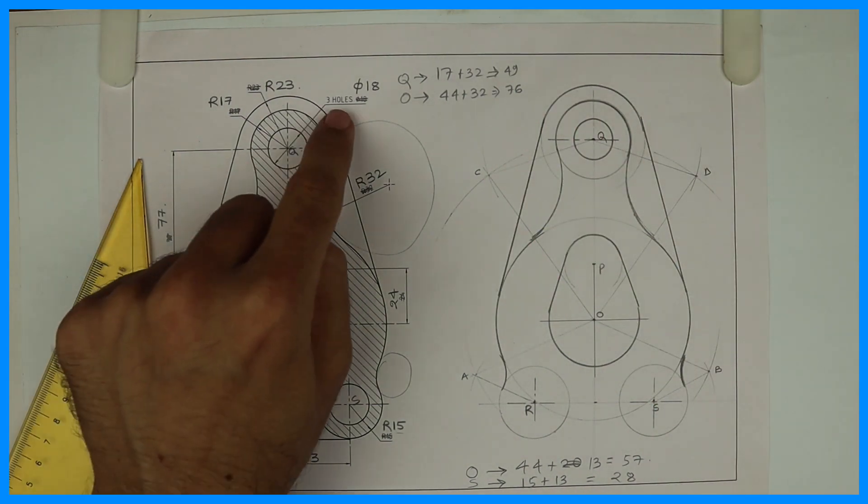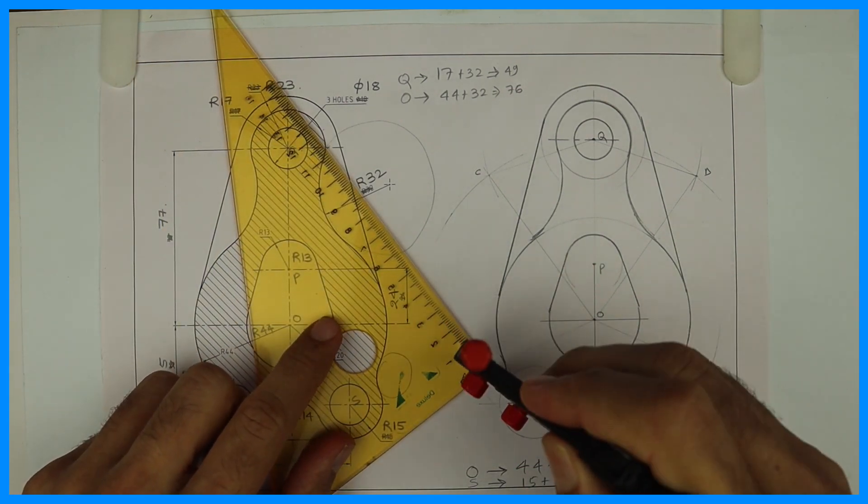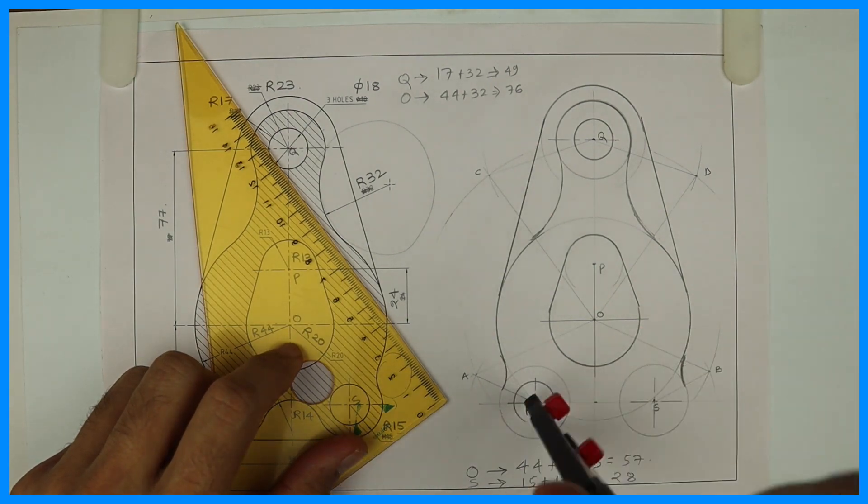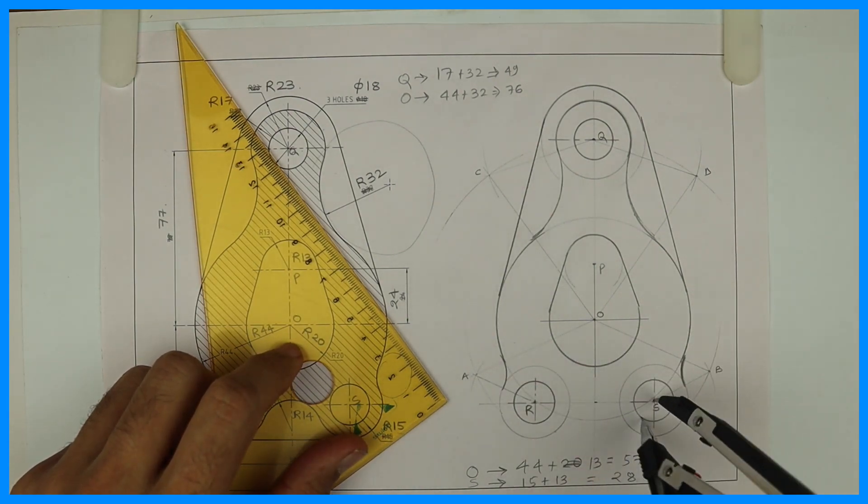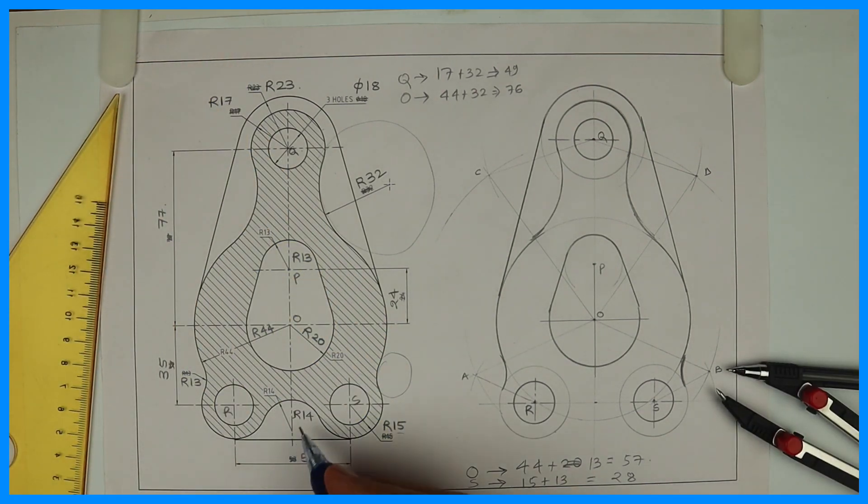Now one more circle is remaining. See this is diameter 9, so that we will draw first. And if you see, one more arc is remaining, that is radius 14, so that is external.